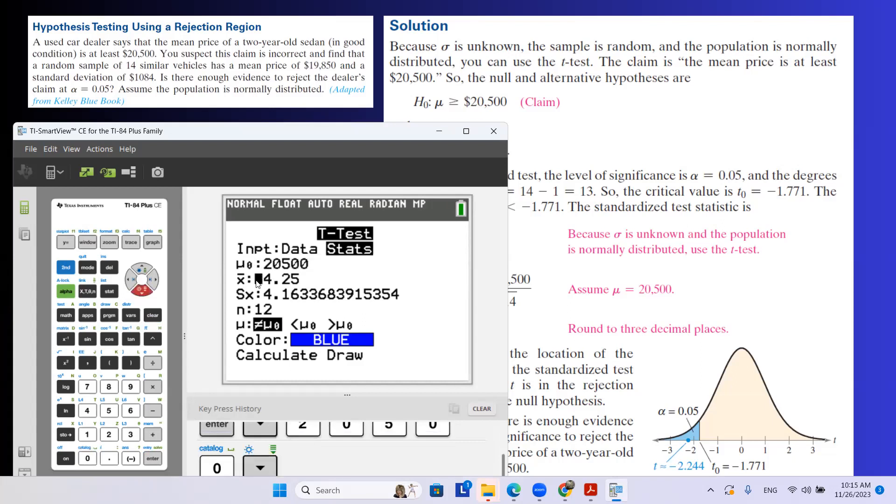X bar is the sample mean, which is $19,850. Standard deviation of the sample is 1,084. And then in the next step, you have the sample size, which is 14. And remember that it's a left-tail test.